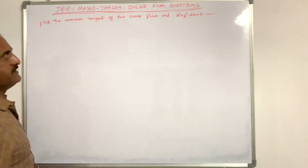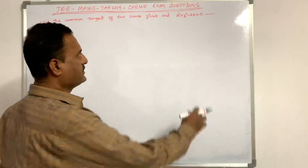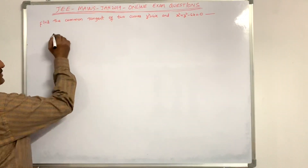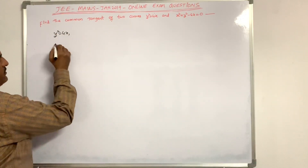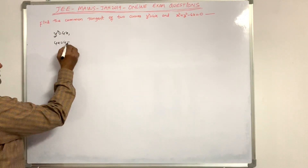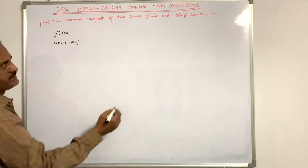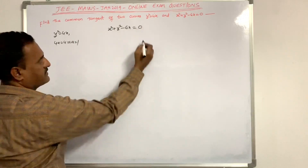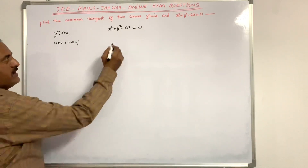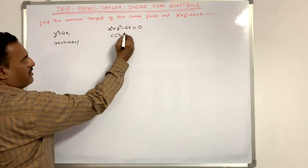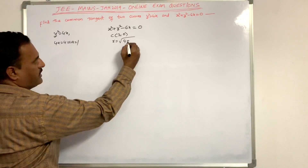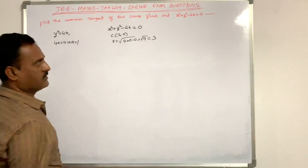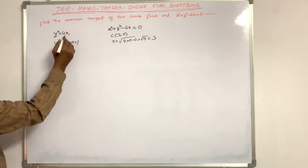Next problem: find the common tangents of the two curves y² = 4x and x² + y² - 6x = 0. Here y² = 4x is a parabola with 4a = 4, so a = 1. The circle equation x² + y² - 6x = 0 has center (3, 0) and radius r = √9 = 3.